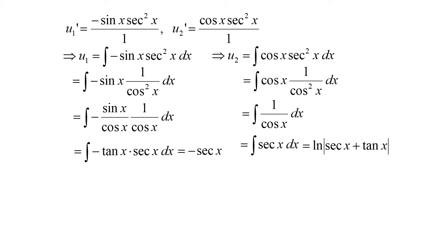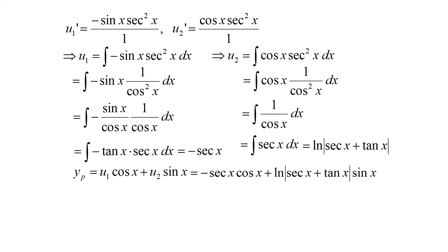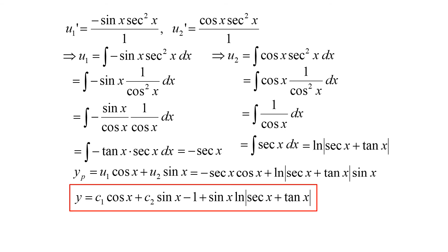We plug u1 and u2 back into yp = u1·cos(x) + u2·sin(x), giving: -sec(x)·cos(x) + ln|sec(x) + tan(x)|·sin(x). Multiplying sec(x) and cos(x) gives 1, so that simplifies to -1. Our overall solution is y = c1·cos(x) + c2·sin(x) - 1 + sin(x)·ln|sec(x) + tan(x)|.